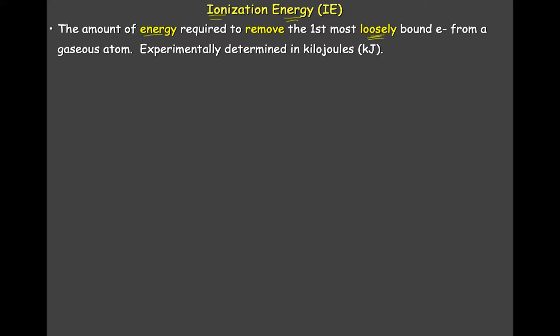Sometimes this is called the first ionization energy. The second electron, if you want to pop off another one, that would be the second ionization energy. You can go on down the line to keep pulling electrons off, and they would tabulate these values. Think of it as the effort needed to pull off an electron — and we get some interesting results from this.